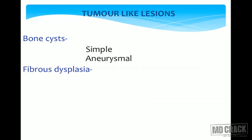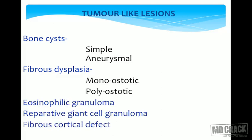Tumor-like lesions are very important. These include bone cysts — either the simple bone cyst (also called unicameral bone cyst, UBC) or the aneurysmal bone cyst (ABC). Others include fibrous dysplasia which can be monostotic or polyostotic, eosinophilic granuloma, reparative giant cell granuloma, and fibrous cortical defect.